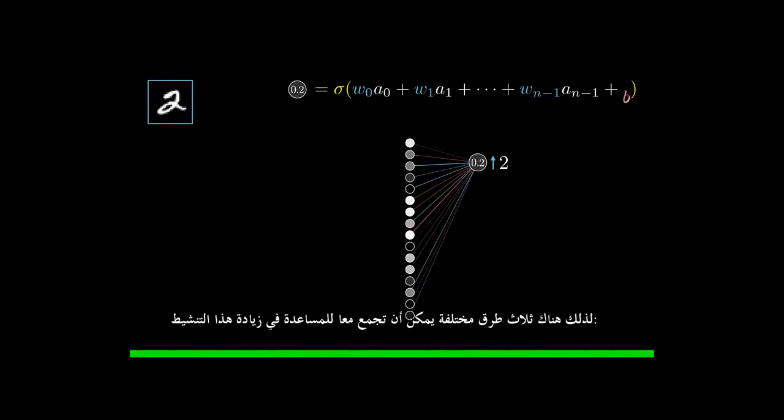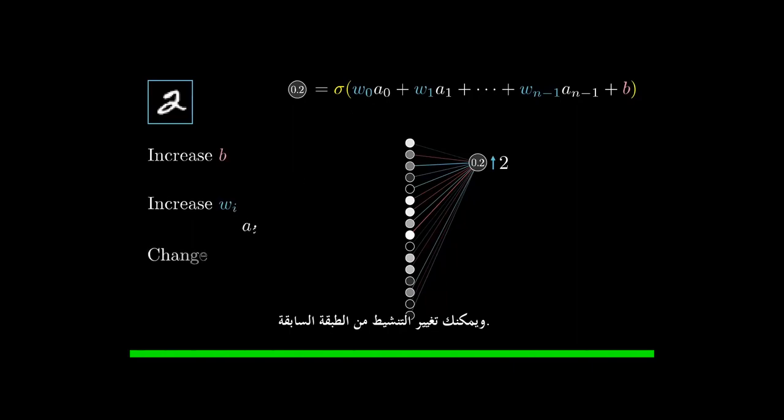So there are three different avenues that can team up together to help increase that activation. You can increase the bias, you can increase the weights, and you can change the activations from the previous layer. Focusing just on how the weights should be adjusted, notice how the weights actually have differing levels of influence. The connections with the brightest neurons from the preceding layer have the biggest effect, since those weights are multiplied by larger activation values. So if you were to increase one of those weights, it actually has a stronger influence on the ultimate cost function than increasing the weights of connections with dimmer neurons, at least as far as this one training example is concerned.